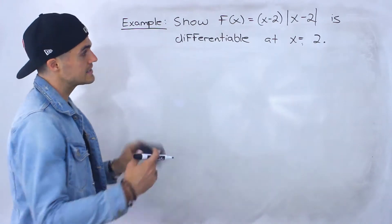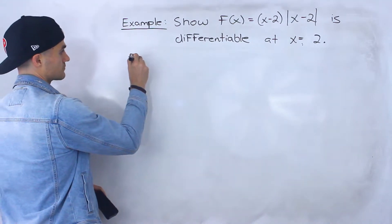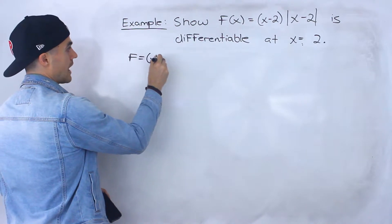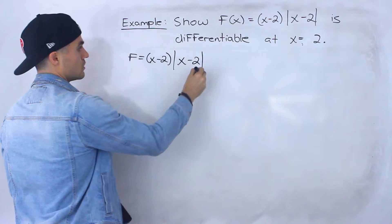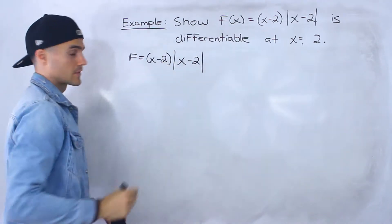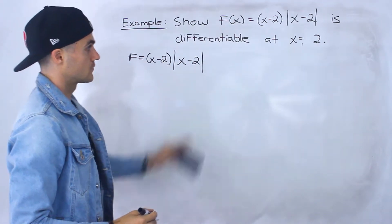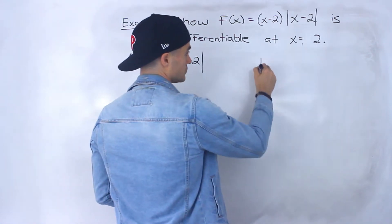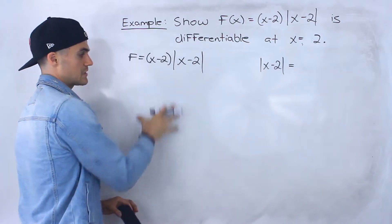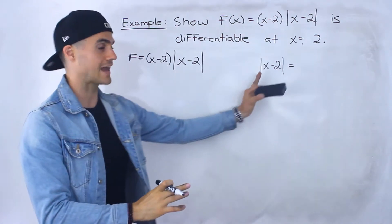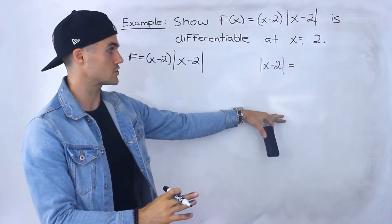Like I did in the previous examples, what I'm first going to do is graph this. And because it has an absolute value, what we can do is change this to be a piecewise function, because we can take an absolute value and make it a piecewise function.